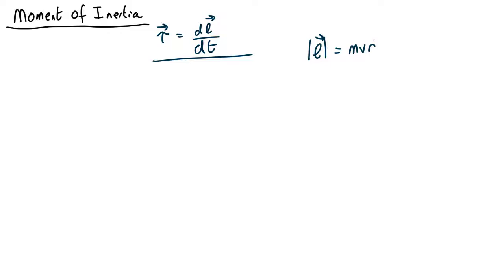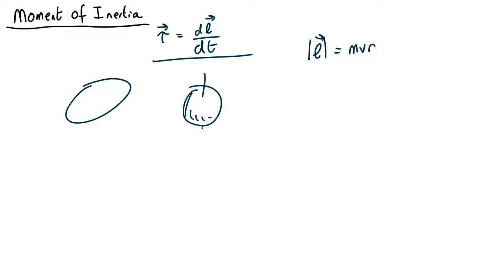Usually we're not dealing with a single point object moving in a circle — we're dealing with something solid, like a rotating wheel or a rotating planet. If the planet or wheel is spinning around its axis, what's the angular momentum of that? We need to know this to work out how much torque we need to apply to speed it up or slow it down.